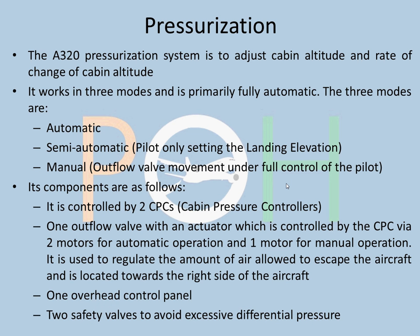The A320 pressurization system is to adjust cabin altitude and rate of change of cabin altitude. Keep in mind — the word 'pressurization' is there, but the system is actually not pressurizing the aircraft; it is maintaining cabin altitude or rate of change of cabin altitude. Pressurization is already coming from the air conditioning via the packs. It works in three modes: automatic, semi-automatic, and manual. Semi-automatic is where the pilot sets the landing elevation; manual is under full control of the pilot.